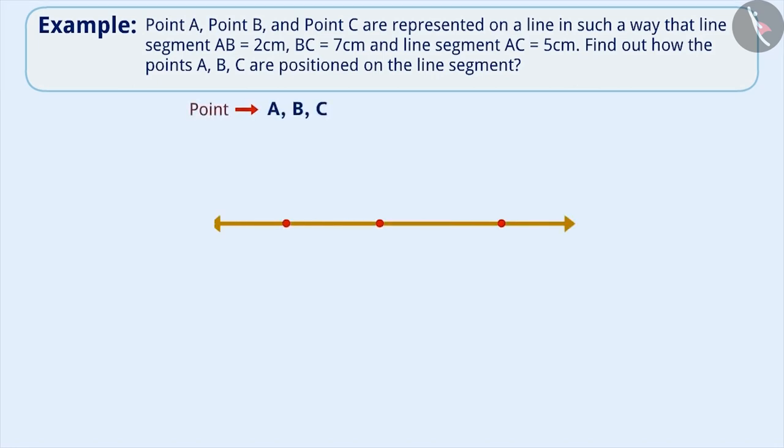These three points are on one line. That means the third point will come between any two points. To represent points on the line, first we will find out the middle point. Do you have any idea how we are going to do it? Think for a while.